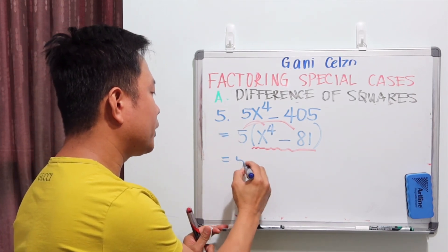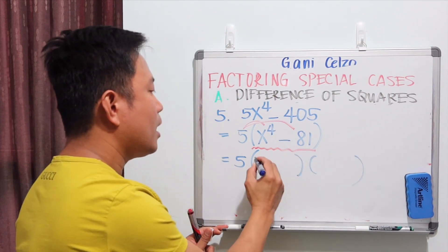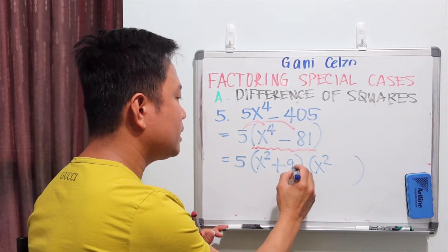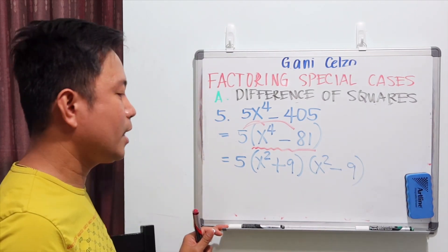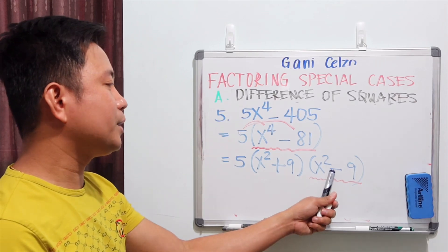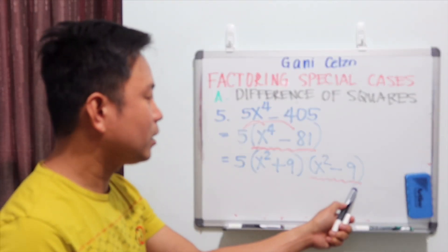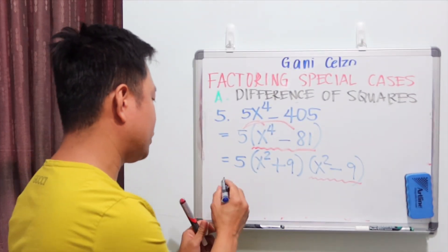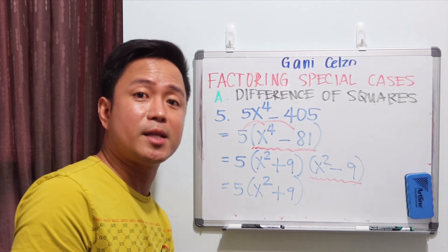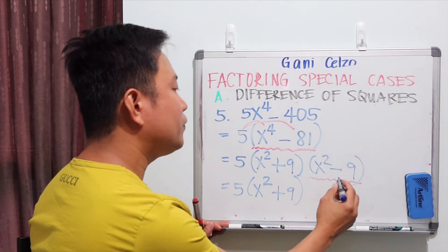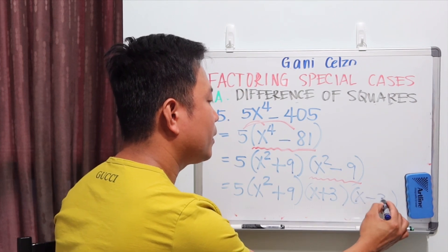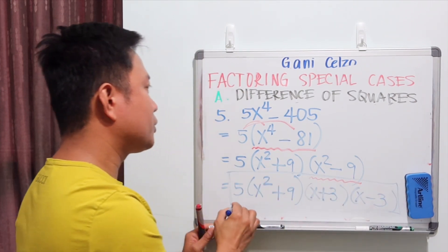Simplifying further: x² times x² gives x⁴, and for 81 we need (x² + 9)(x² - 9). Now x² - 9 is another difference of perfect squares, so we can factor it further as (x + 3)(x - 3). On the other hand, x² + 9 cannot be factored because it has a plus sign, not a minus. So the complete factored form is 5(x² + 9)(x + 3)(x - 3).